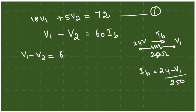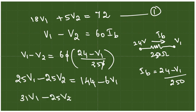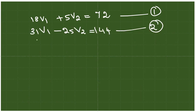So V1 minus V2 equals 60 times 24 minus V1 divided by 250. You can cancel and cross multiply by 25. So this is 25V1 minus 25V2 equals 6 into 24 minus 6V1. That gives us 31V1 minus 25V2 equals 144. So this is our second equation.